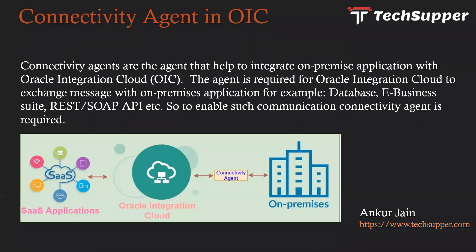What is connectivity agent? Connectivity agents are agents that help to integrate on-premise applications with Oracle Integration Cloud. The agent is required for Oracle Integration Cloud to exchange messages with on-premise applications, for example, database, e-business suite, REST or SOAP APIs, etc. So to enable such communication, a connectivity agent is required.